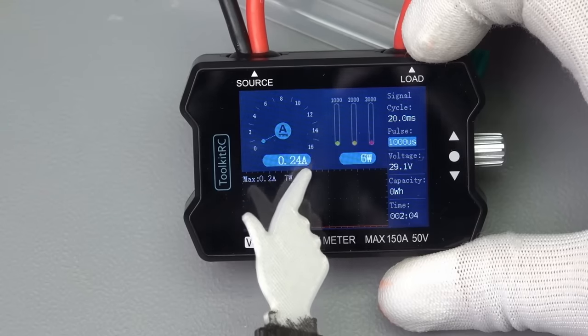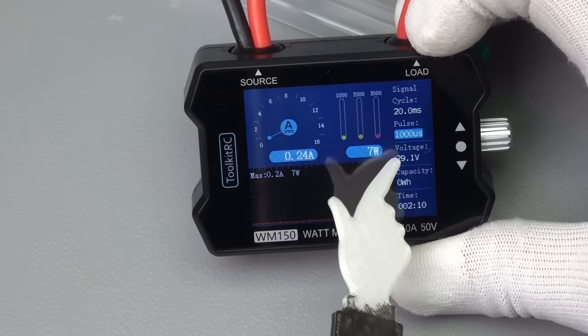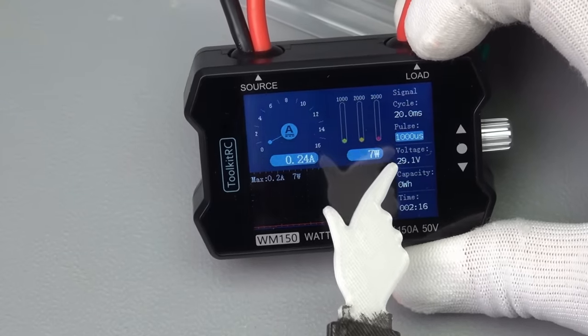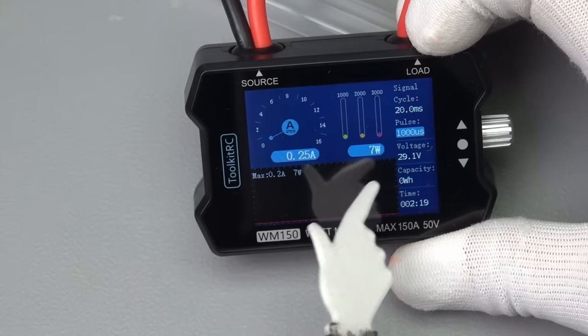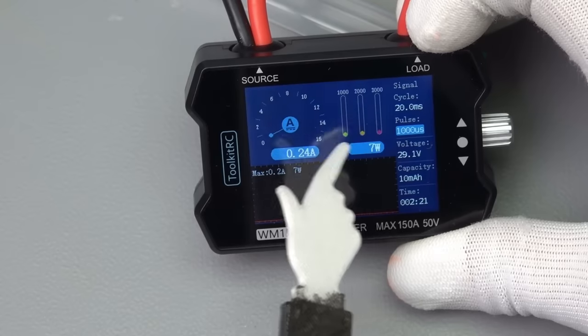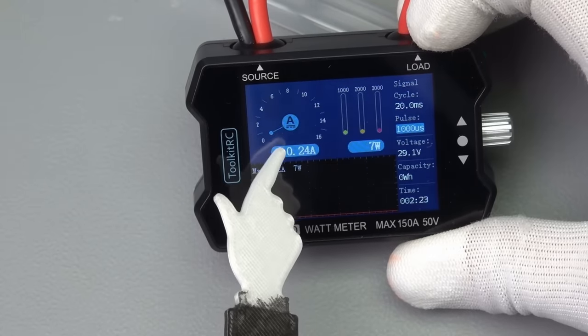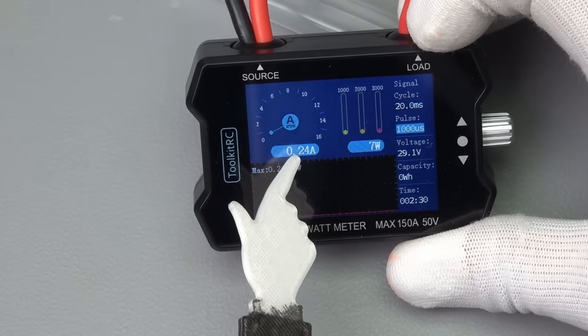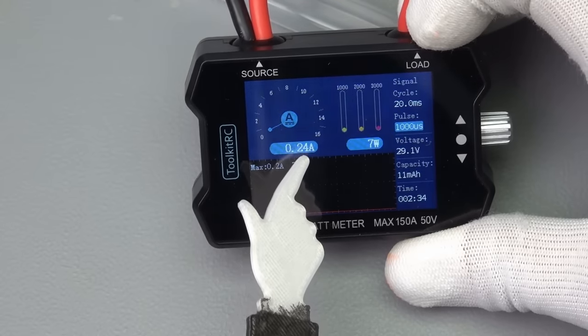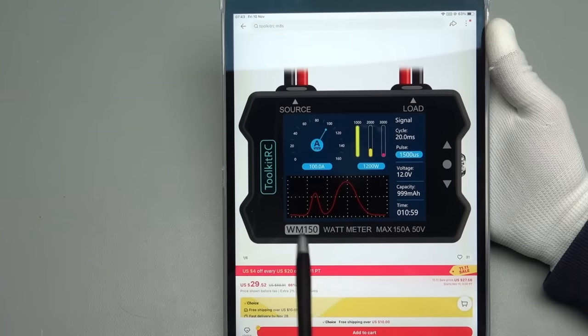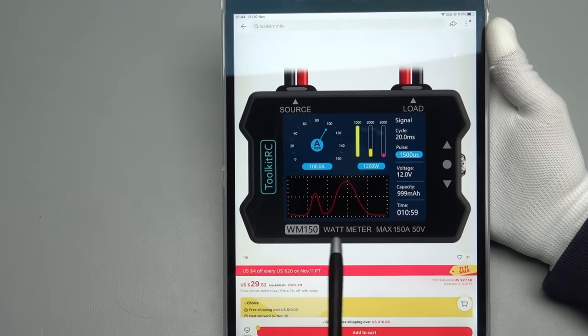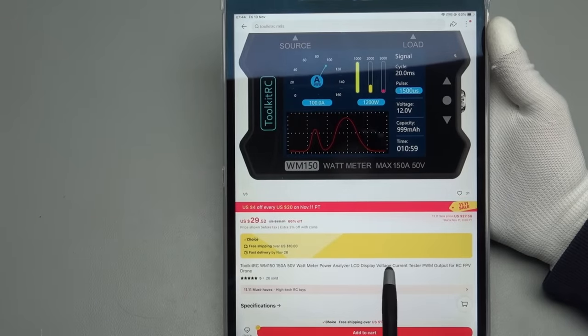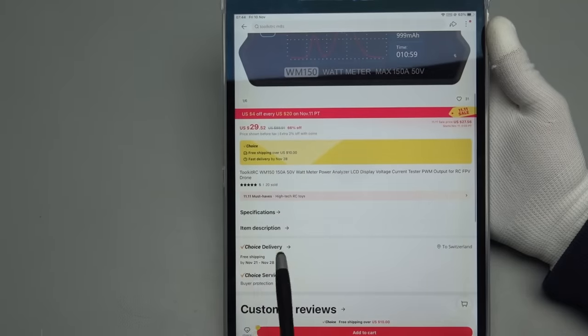It is not that this 0.2A is the consumption of the device itself and that it measures the input current. No, it only consumes 30mA, not 250mA or 7W. This is disappointing because the device is very nicely made, the display is nice and everything, and it seems also to be quite accurate except for this problem here. I do not know if this is only mine. Maybe you comment if you own also one. Here is the listing of this Toolkit RC wattmeter, the WM150. It is $29.52 and free shipping.